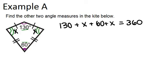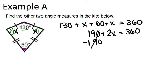And we can solve that equation for x in order to find the answer to the question. So when we solve this, we should start by combining like terms. 190 plus 2x equals 360, then minus 190 from both sides.